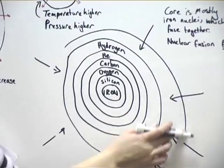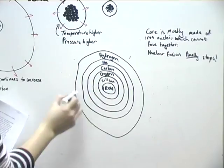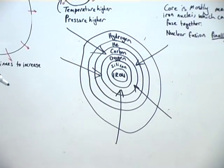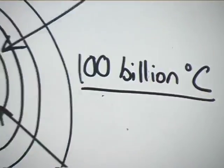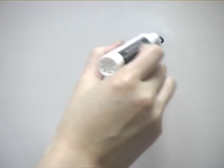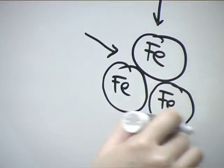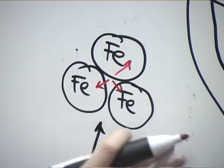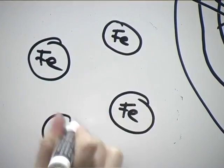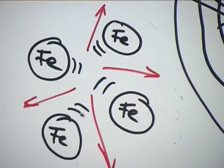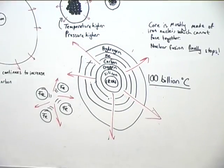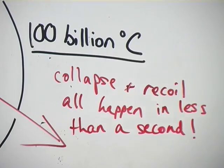The star begins to collapse for the last time with the core rising to over a hundred billion degrees Celsius. The iron nuclei get crushed together, but the electrostatic repulsive force between them overcomes the gravitational force, so that the collapse recoils and bounces back outwards. The final collapse and recoil all happen in less than a second, and an explosive shockwave is created.